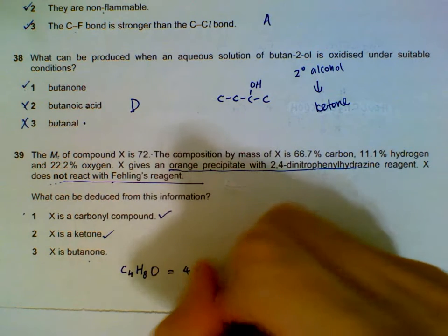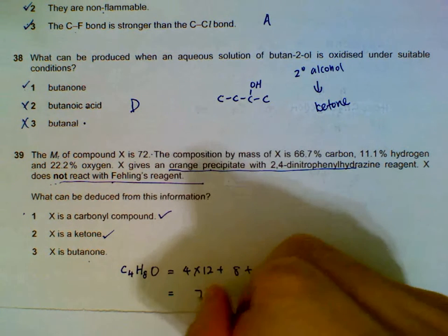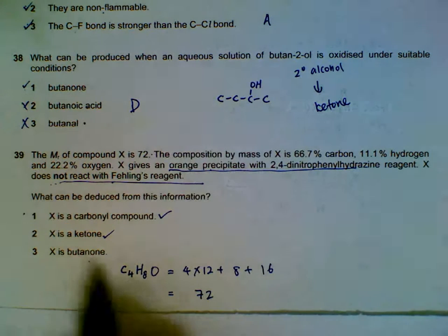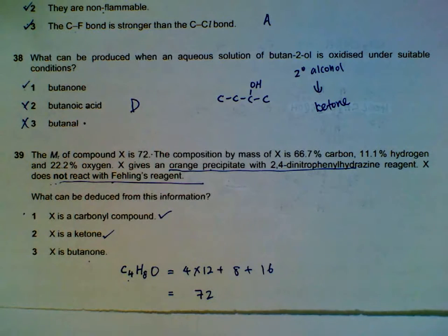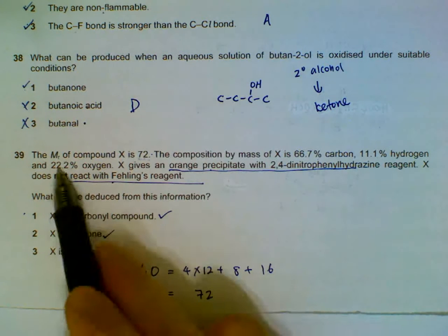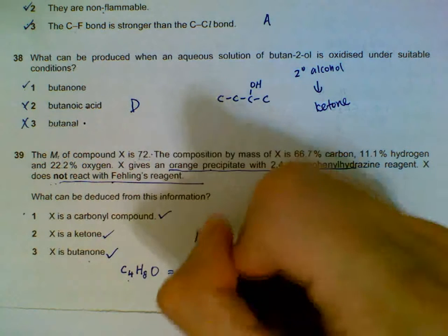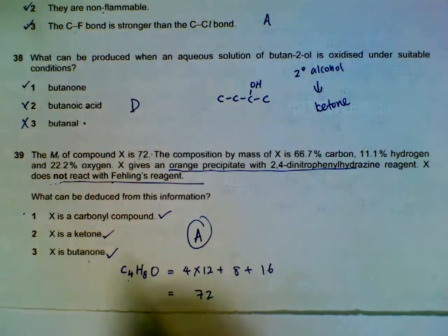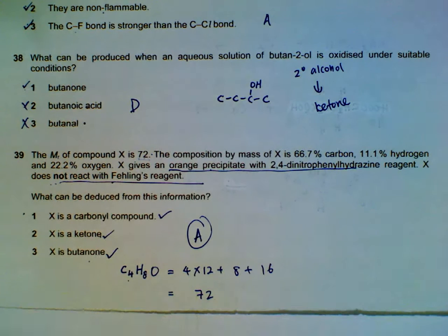Then see whether the Mr actually gives us 72. In this case, 4 multiplied by 12 plus 8 plus 16 - it does give us 72. So we can write out the structure, write out the formula, and then confirm whether it fits the 72. There's actually no need to use the percentages to find the empirical formula, but if you do that, you still get the same reasoning and answer. So all three are correct, because we already say we know it's a ketone, and if it's a butanone, it does fit the Mr.